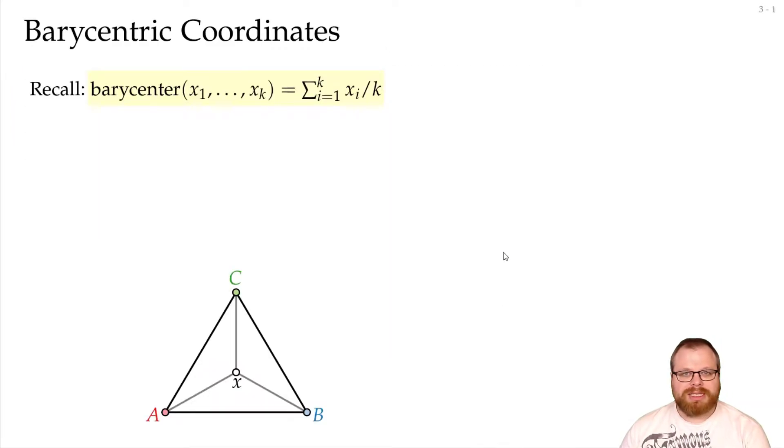Now let's recall what barycentric coordinates are, which we should still know from Tutte's theorem. The barycenter of k vectors is just the mean of those vectors. So we sum all of them up and divide it by k.